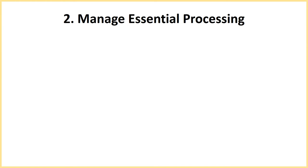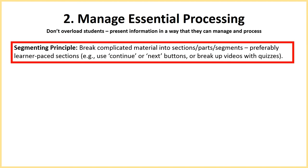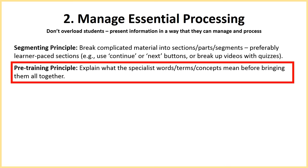On to section two. In this section, Mayer is saying we need to manage the essential processing. Taking the idea that there is a maximum amount of cognitive input, he says: we've stripped out all the extraneous stuff — now how do we make sure we don't overload students and present information in a manageable way? Firstly, the segmenting principle: break complicated material into sections or parts — use continue or next buttons in interactive presentations, or simply break up videos with quizzes. The pre-training principle says: explain specialist terms before bringing them together with diagrams or other information, because otherwise we'll be trying to process them at the same time as something else.